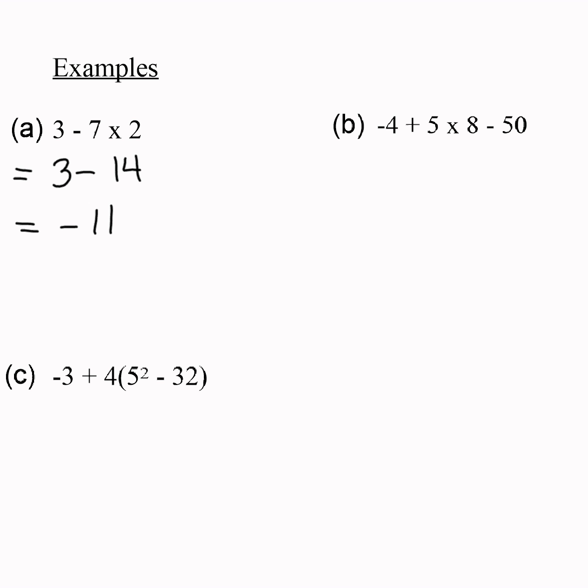Let's look at this next one. We have negative 4 plus 5 times 8 minus 50. We do multiplication first. Negative 4 plus 40 is 36. 36 minus 50 is negative 14.